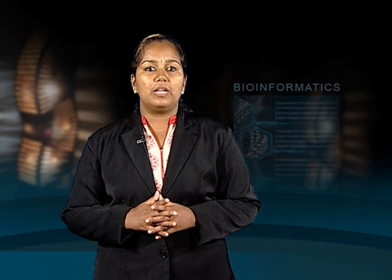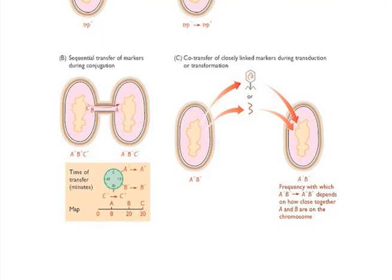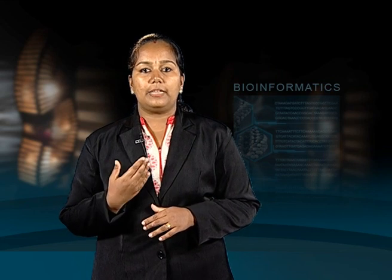DNA is transferred from donor to recipient in the same way that a string is pulled through a tube during conjugation. The relative positions of markers on the DNA molecule can therefore, be mapped by determining the times at which the markers appear in the recipient cell. The markers A, B and C are transferred 8, 20 and 30 minutes after the beginning of conjugation respectively. The entire Escherichia coli chromosome takes approximately 100 minutes to transfer.